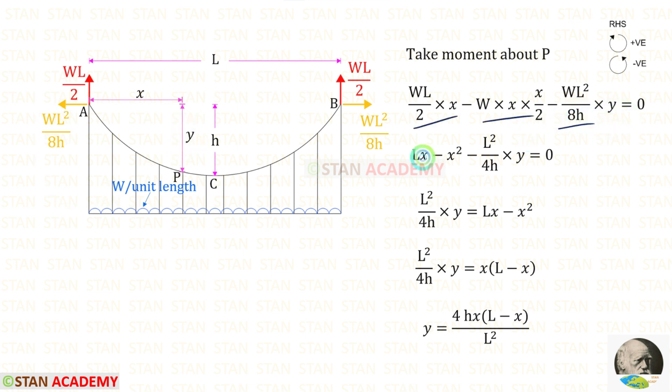From all of these we can take W upon 2 outside and we can take it on the right side. Then we can take this term on the other side so it will come as positive. We can take x outside. Then we can take L square upon 4h on the other side. Finally for y we will get 4hx into L minus x upon L square.